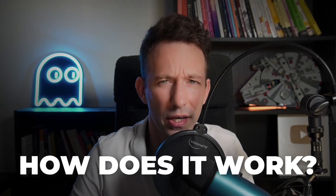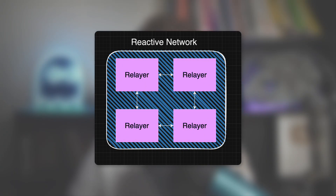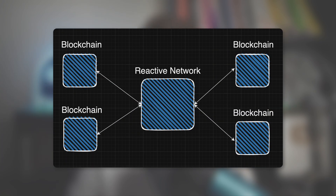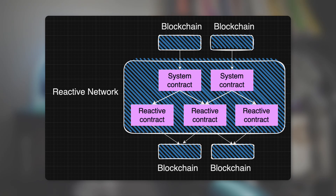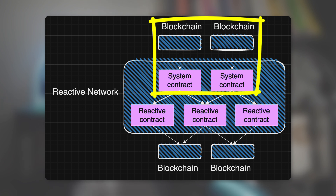So now you understand what the Reactive Network is and its main use cases. But how does it work exactly? The Reactive Network is a blockchain, run by a network of relayers that achieve consensus through proof of stake. Even though it's technically a blockchain, it's meant to be a connection layer between blockchains, not a platform to build separate decentralized applications — so it doesn't need its own liquidity. Inside the Reactive Network, events coming from connected blockchains first land in system smart contracts, with one system smart contract for each connected blockchain.